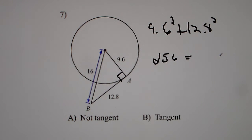Does that equal 16 squared? Yes it does. 256 equals 256. So number 7 is tangent.